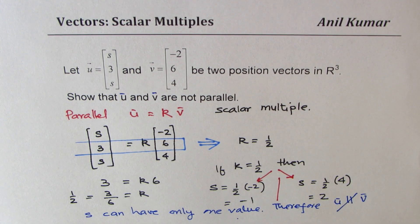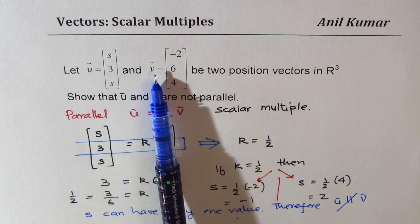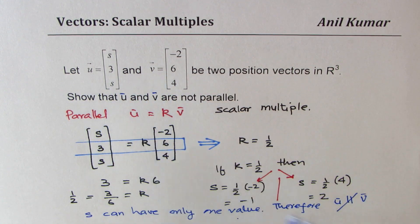So that is how you can actually show that these two vectors will never be parallel. So I hope that makes sense. We cannot have a scalar multiple to satisfy this particular relation, and so we cannot have these two vectors as parallel. So I hope that helps.